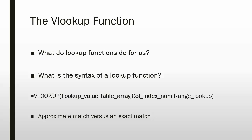You'll notice that three of these — lookup value, table array, and column index number — are in bold and therefore are required arguments, while the range lookup is an optional argument.